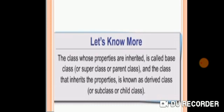The class whose properties are inherited is called the base class, or the super class, or the parent class. The class that inherits the properties is known as the derived class — that is, your sub-class or child class. We will learn much more about inheritance in the next session.